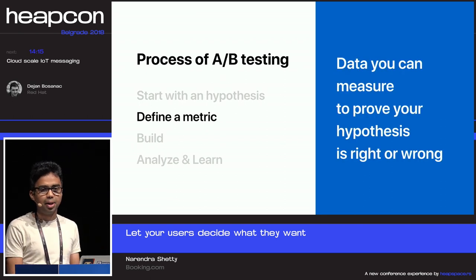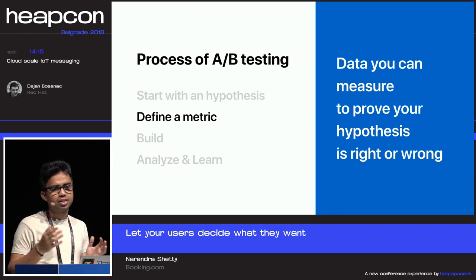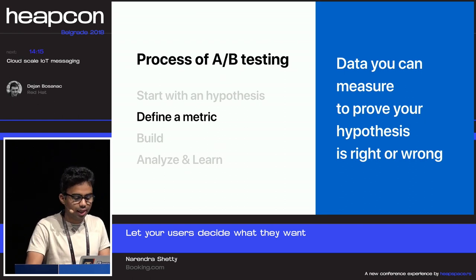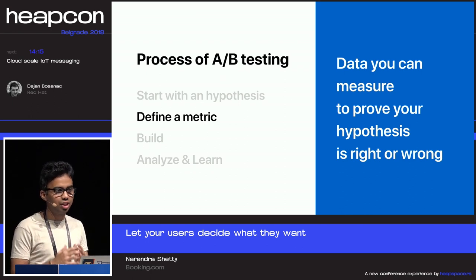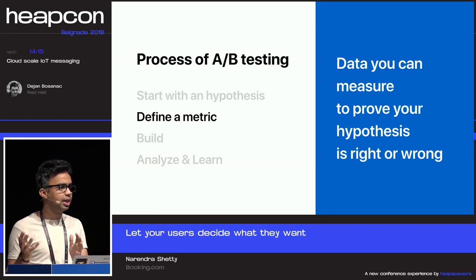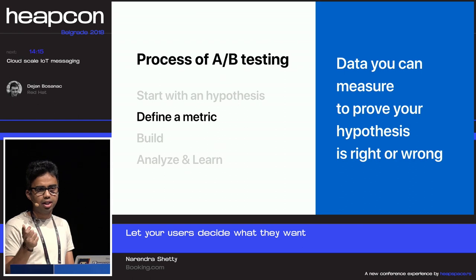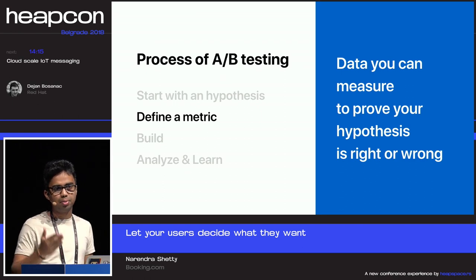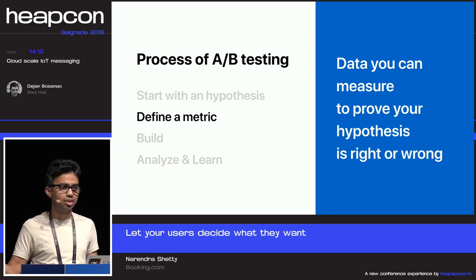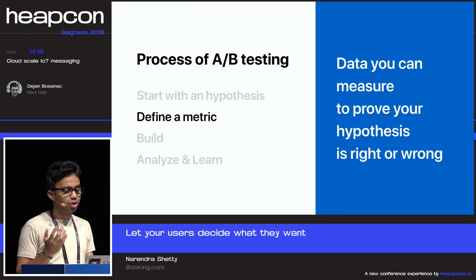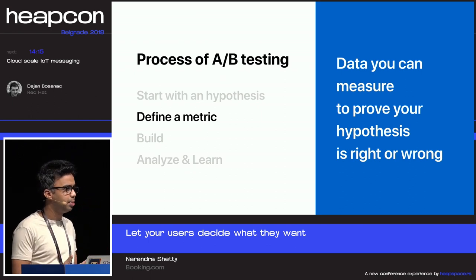Once you have a hypothesis, you define the metrics. Based on your hypothesis, to prove or disprove it, you need a key metric. For an e-commerce company it's simple: make more money. You can categorize metrics in two broad categories: shallow metrics and deep metrics. Shallow means I changed a button color and got more clicks. Deep metrics means those clicks led to more bookings or signups. Depending on the type of experiment, either could be your key metric.